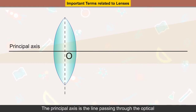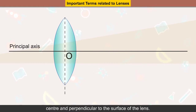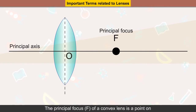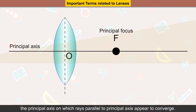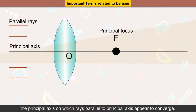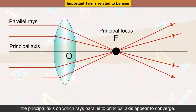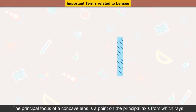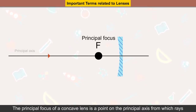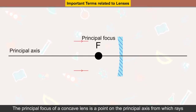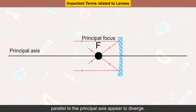The principal axis is the line passing through the optical center and perpendicular to the surface of the lens. The principal focus of a convex lens is a point on the principal axis on which rays parallel to the principal axis appear to converge.